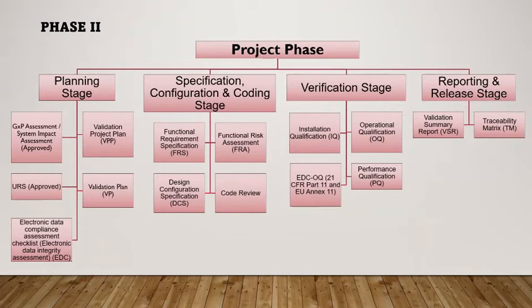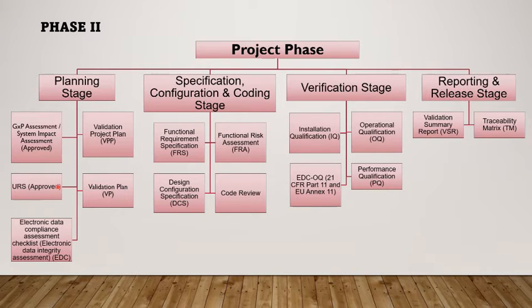Now we will discuss about phase 2, that is the project phase. The project phase is further subdivided into 4 stages. The first is the planning stage. Planning of the validation should be focused with respect to patient safety, product quality and data integrity. After getting the GXP assessment and URS finalized and approved, the next deliverable is the validation project plan, which is prepared to track the status of deliverables required as per the respective GAMP category and to know the status of implementation of the project.